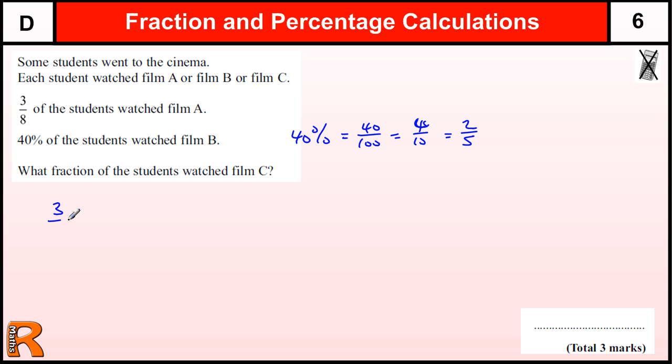So, how many is that in total? Three-eighths plus two-fifths. To do that, we need to convert them into something that has the same denominator.